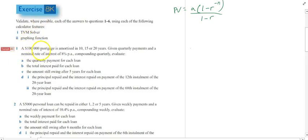All right, jumping straight into this question. A $100,000 mortgage is amortized in 10, 15, or 20 years. I'm just going to do the 10-year case. Given quarterly payments and a nominal rate of 8% per annum compounding quarterly, evaluate the quarterly payment for each loan.